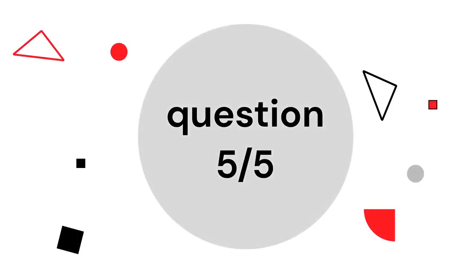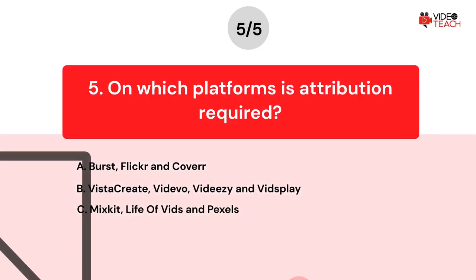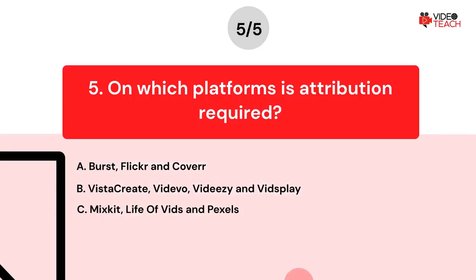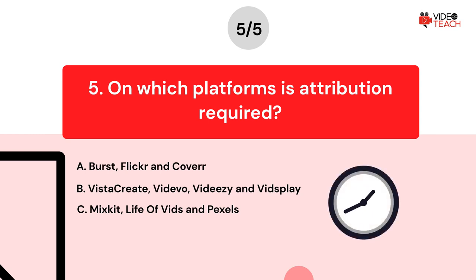Let's go to the last question, question number five. On which platforms is attribution required? Option A: Burst, Flickr, and Cover. Option B: VistaCreate, Videvo, Videzi, and Vidsplay. Option C: Mixkit, Life of Vids, and Pexels. Now you have about 15 seconds to think about your answer.